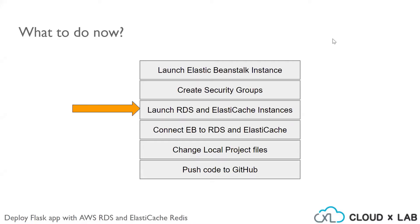Now that we have created the security groups, it's time to launch the RDS and ElastiCache instances and configure the security groups. Let's move ahead to the AWS console.